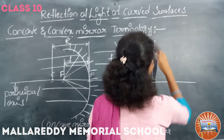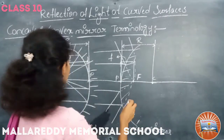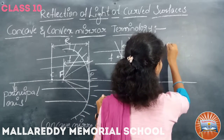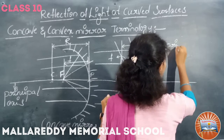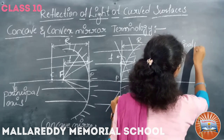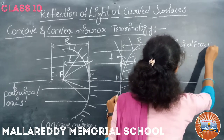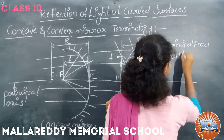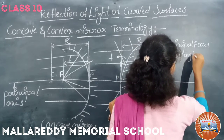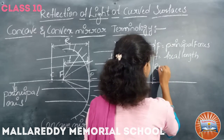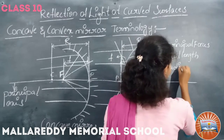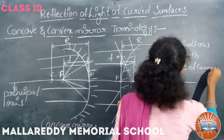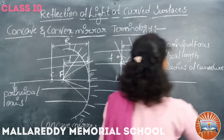So the new terms from this diagram: capital F is the principal focus, and small f is the focal length.